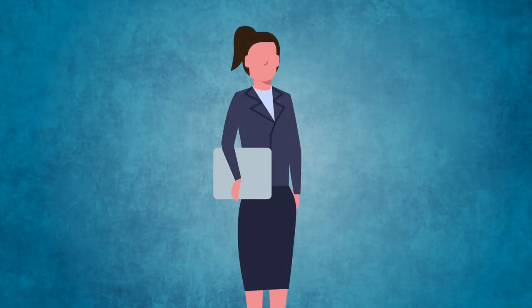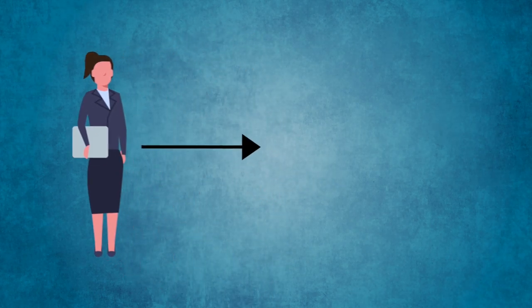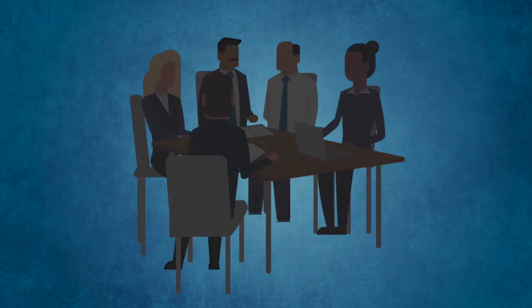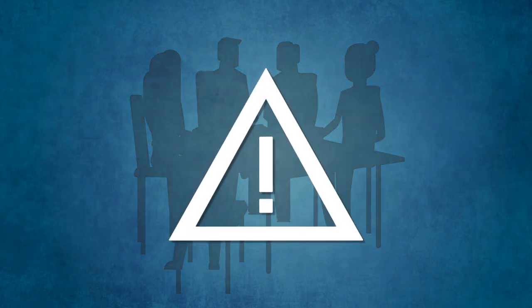Your AML-CTF compliance officer will also be your primary contact to AUSTRAC, responsible for lodging reports on suspicious matters to us. And always remember, there can be serious consequences for failing to report or for failing to maintain adequate AML-CTF controls and systems.